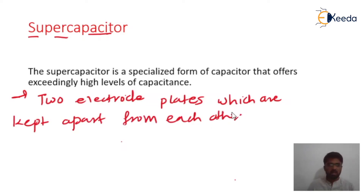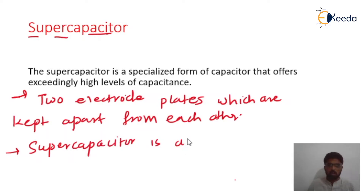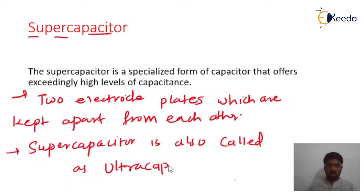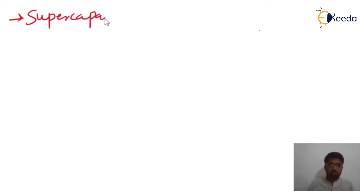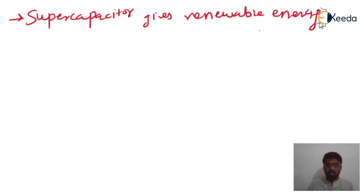A supercapacitor is also called an ultracapacitor. Nowadays we use batteries for backup power supply, but batteries have limitations including pollution. The supercapacitor overcomes all the disadvantages of a battery and is a completely renewable source — it gives renewable energy which can be used repeatedly.